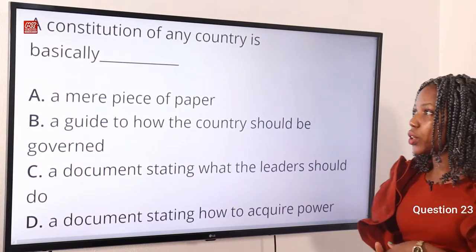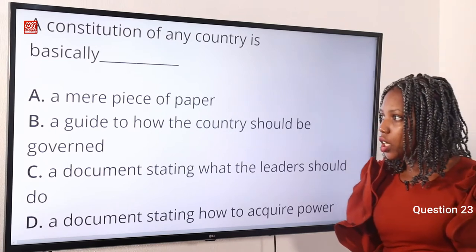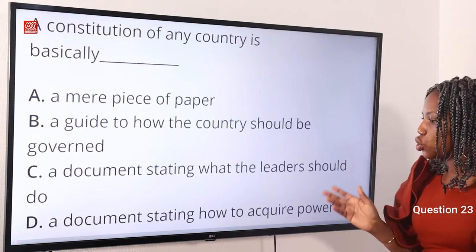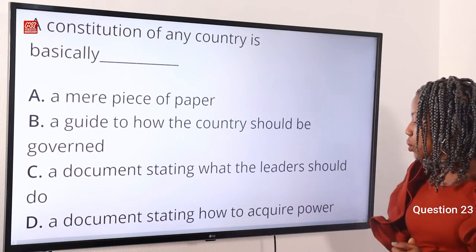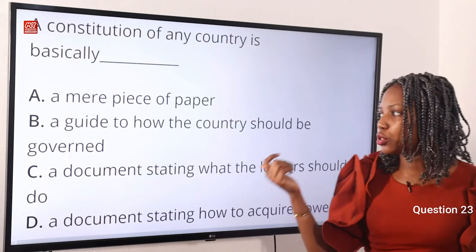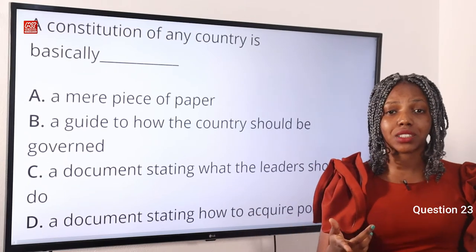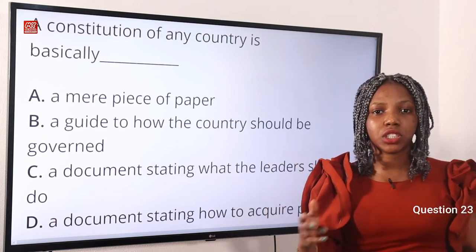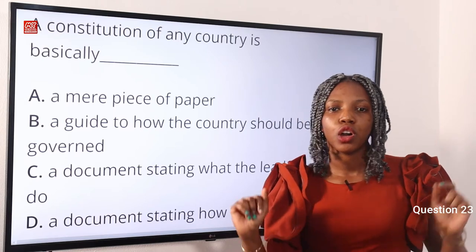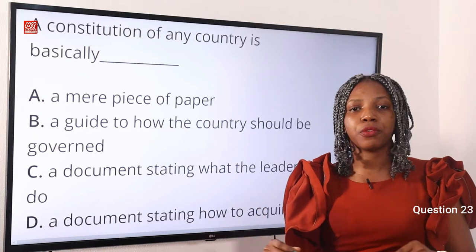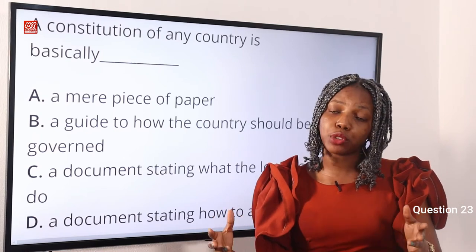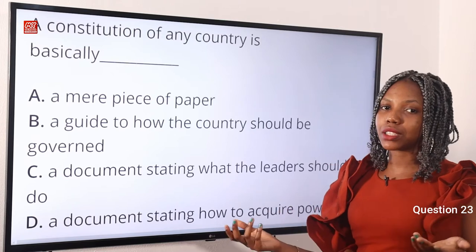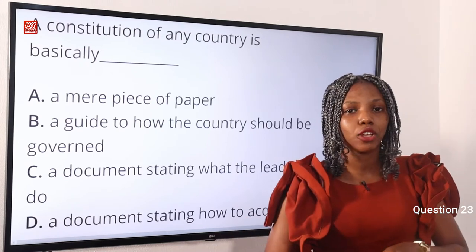Question 23. A constitution of any country is basically dash. Option A, a mere piece of paper. Option B, a guide to how the country should be governed. Option C, a document stating what the leaders should do. Option D, a document stating how to acquire power. The answer is Option B. A constitution is a body of agreed rules and principles stating how the powers of governing a state are given and how these powers are to be exercised. Option B is correct.